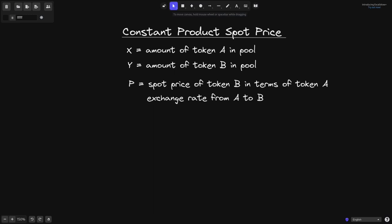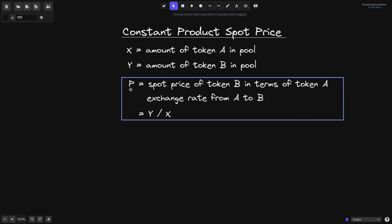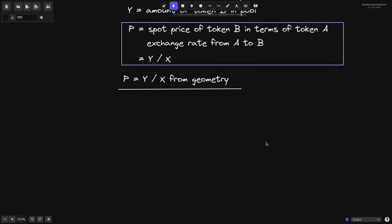If I have one token A, then how much is it worth in token B? This spot price P is given by y divided by x — the amount of token B divided by the amount of token A. Let's see why P is equal to y divided by x. I'll show you why this is so in two ways: from a geometry perspective and from calculus.